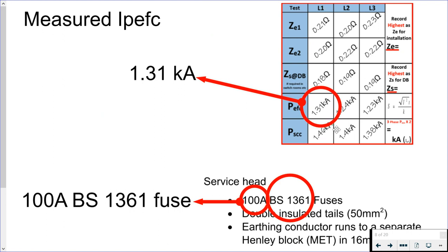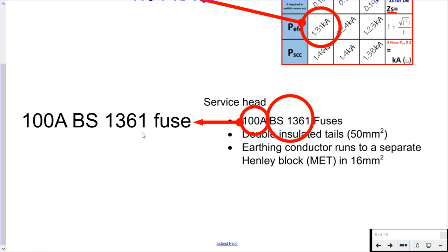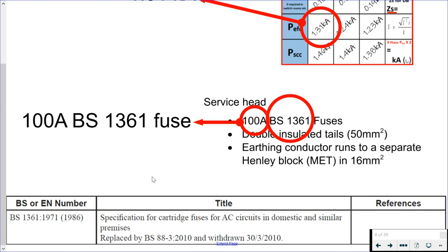Our measured highest prospective earth fault current was 1.31 kilo amps, so that's the I value that we're going to be using. Then we have this information from our inspection: 100 amp BS 1361 fuse. Here's the problem: we've not had a BS 1361 fuse in BS 7671 since the 2011 green amendment of the 17th edition. This British standard number has been withdrawn. If you're going to British standards in appendix one and BS 7671, you'll see that it was replaced in 2010 by a BS88-3 fuse.